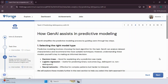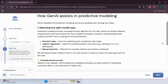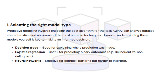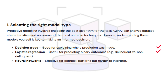On page four, we have how generative AI assists in predictive modeling — there are three steps. First, in selecting the right model type, Gen AI can analyze dataset characteristics and recommend the most suitable techniques: decision trees for explaining why a prediction was made, logistic regression for predicting binary outcomes, and neural networks for complex patterns but harder to interpret.